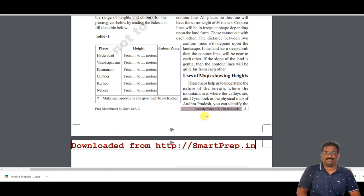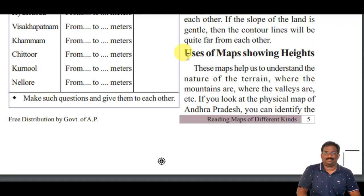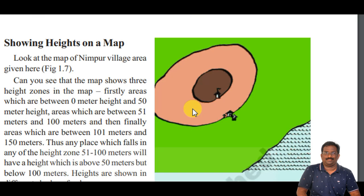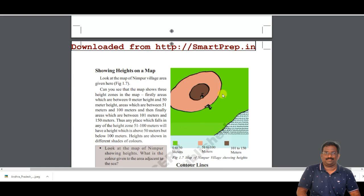Now let us discuss another part of this lesson: the uses of maps showing heights. The contour lines on maps show the heights of certain areas. With contour lines we can show the nature of terrains — mountain areas, valley areas, and even plain areas — by indicating their different heights.